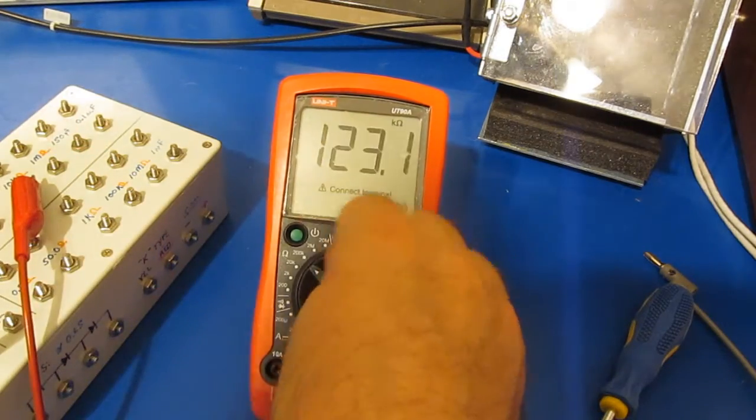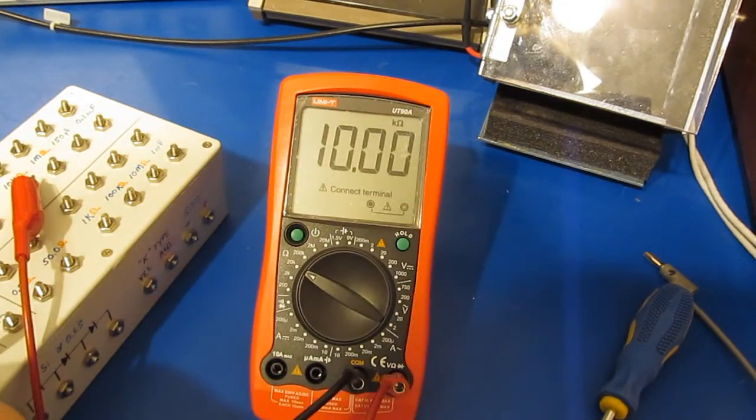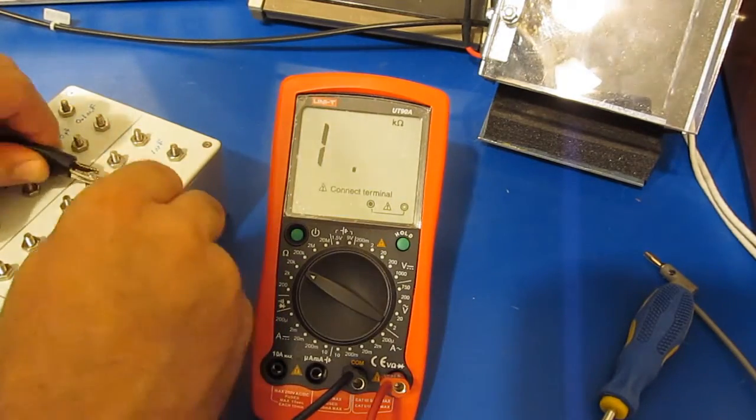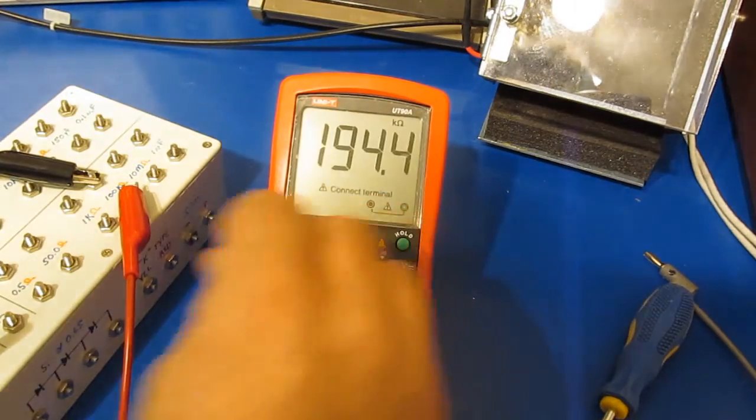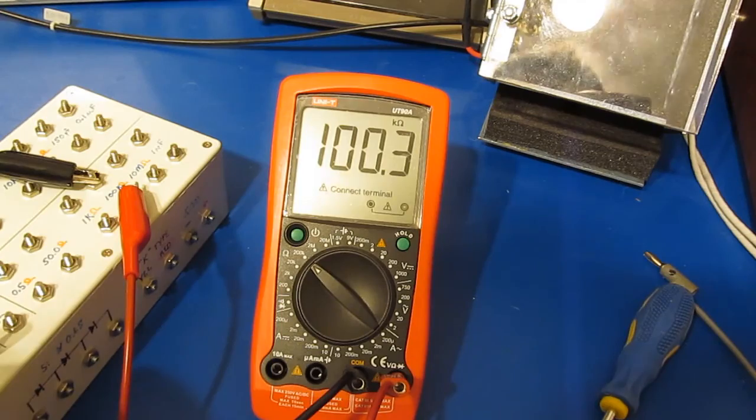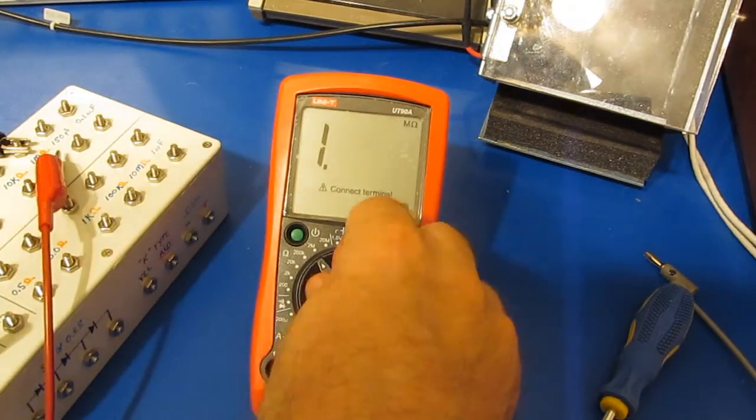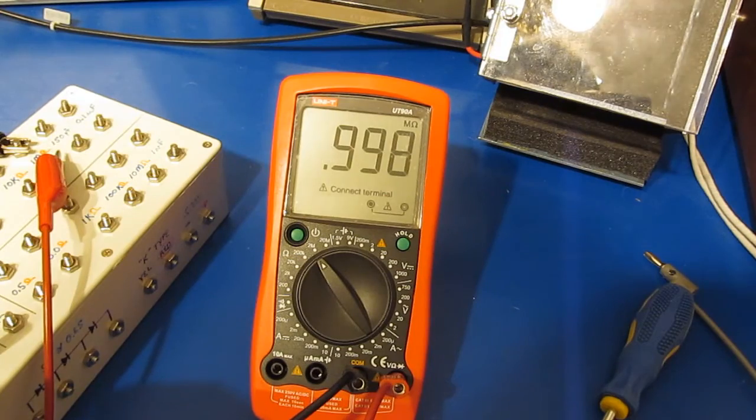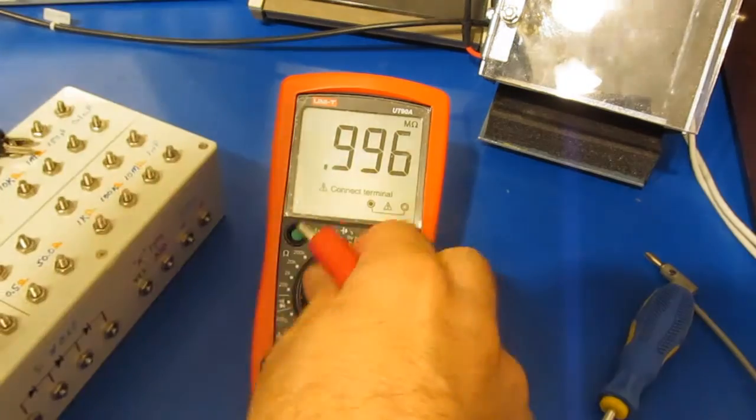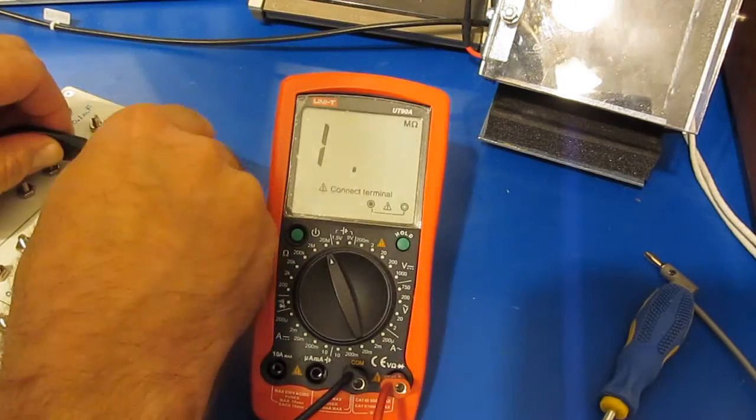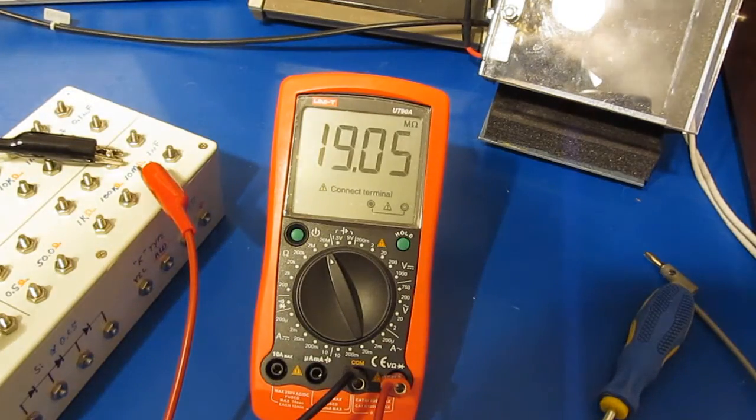1k, go ahead and switch it to the 1k. 10k, switch it to 20k. Looks good. 100k, 100k, we'll go to the 200k mode. Yep, looks fine. Let's be 1 meg, we'll go to the 2 meg range. Looks good. Let's be the 20 meg range and this is a 10 meg resistor.